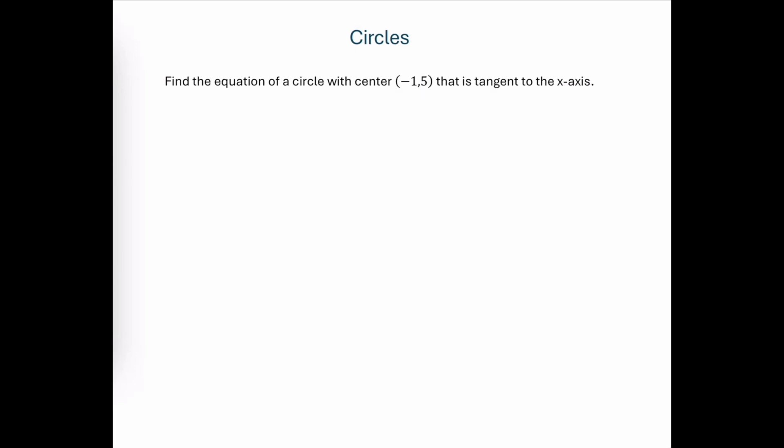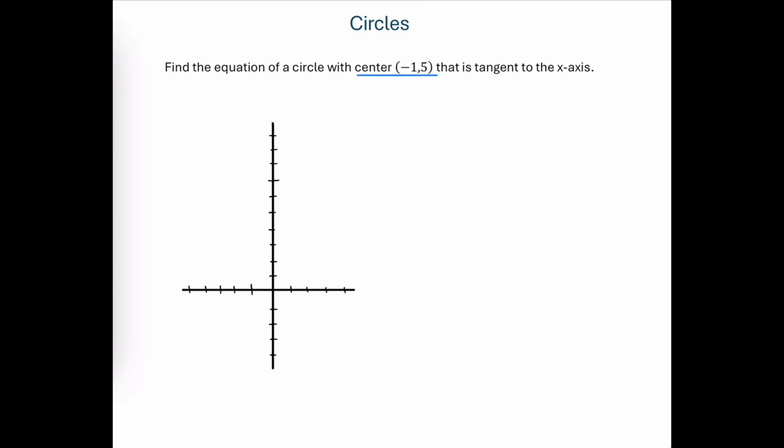Let's interpret this given information by looking first at the graph. First we're told that we have the center of the circle at negative 1, 5.